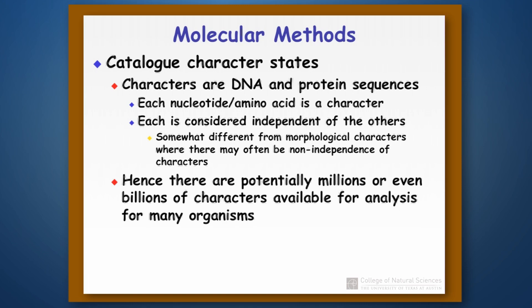What this means is that potentially there are millions or even billions of characters available for analysis. For example, with human beings, our genome sequence is about 3 billion base pairs in length. If you used the entire human genome sequence to reconstruct a phylogeny, you would have 3 billion characters to work with.